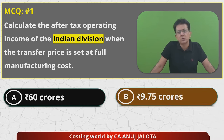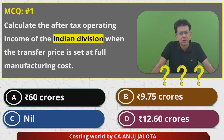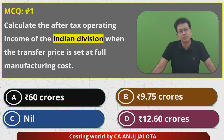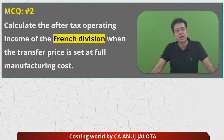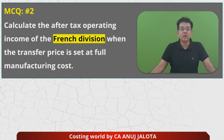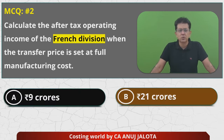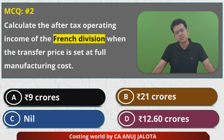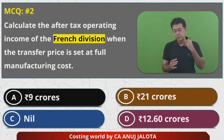MCQ number two is the same but for the French division: calculate the after-tax operating income of the French division when the transfer price is set at full manufacturing cost of ₹12,000. The four options are: ₹9 crores, ₹21 crores, nil, and ₹12.6 crores. To calculate operating income after tax, you compute PAT — which is PBT minus tax. PBT equals sales minus cost.